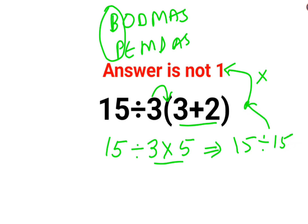But the problem here is that division and multiplication in mathematics hold equal precedence. So at this point you need to go from left to right. This is very important. Sums involving division and multiplication, you need to go from left to right.